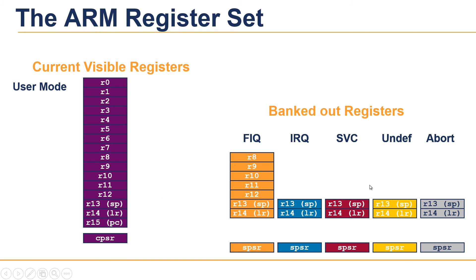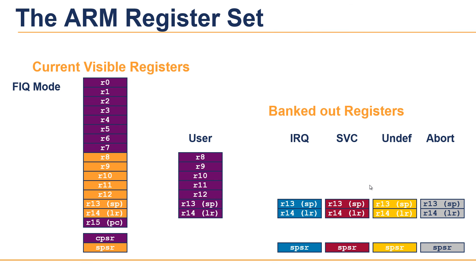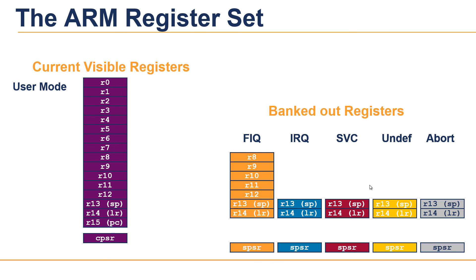This animated slide shows the way that the banking of registers works in the ARM processor. On the left, the currently visible set of registers are shown for a particular mode. On the right, there are the registers that are banked out. Pressing a key will switch the mode — first it starts in User mode, then enters FIQ mode, then comes back to User mode.